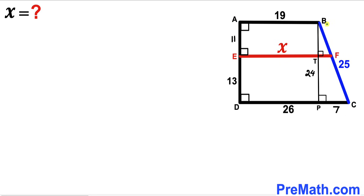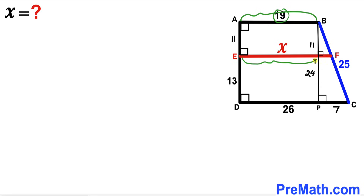Furthermore, segment BT is equal to segment AE. If AE is 11, then BT is also 11. We can see the base AB is 19, so segment ET is 19 as well. Our task now is to calculate the tiny segment TF, which I will label as lowercase a.